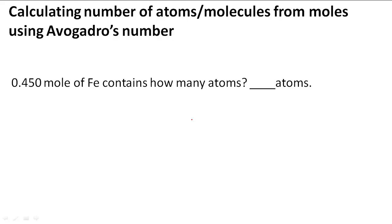Calculating number of atoms or molecules from moles using Avogadro's number. In this example problem, it says 0.450 moles of Fe, or iron, contains how many atoms? So here we have a mole and we are going to convert it to atoms.